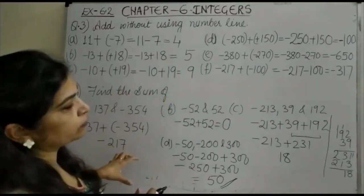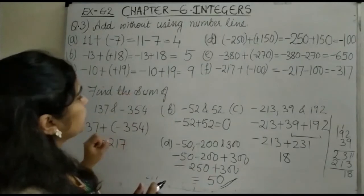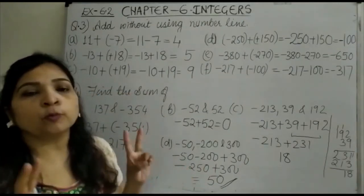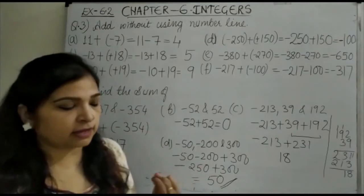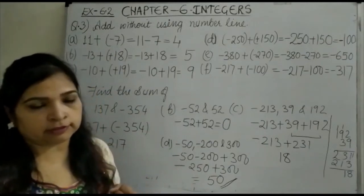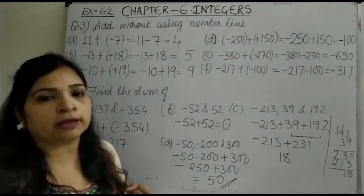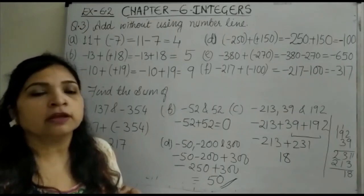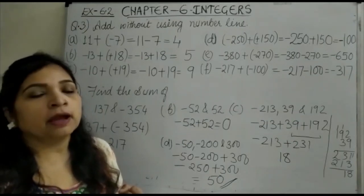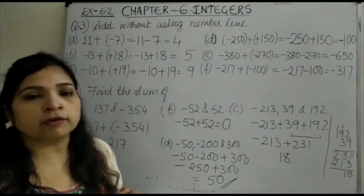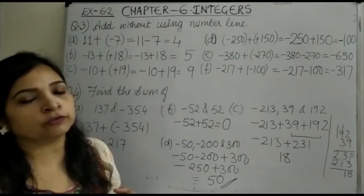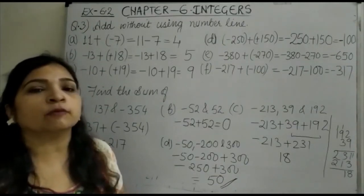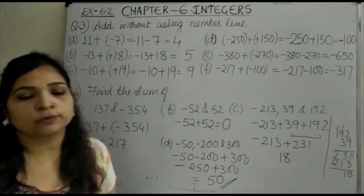In this way we can work out addition without the number line. To revise: if two positive numbers are added, the sign is plus. If a negative and a positive are added, we do subtraction with the sign of the bigger number. Two negative numbers when added give the sum with a minus sign. Thank you.